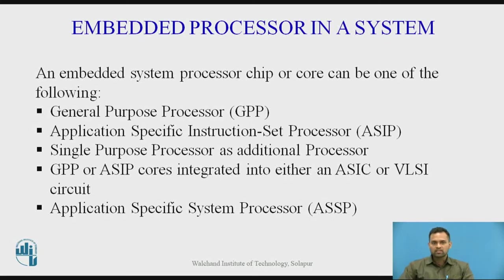The third type is the single purpose processor, also called an additional processor. A processor designed to perform a specific task is called a single purpose processor. Examples include co-processors such as graphic processors, accelerators like Java accelerators, and controllers like DMA controllers and peripherals — all categorized as single purpose processors.